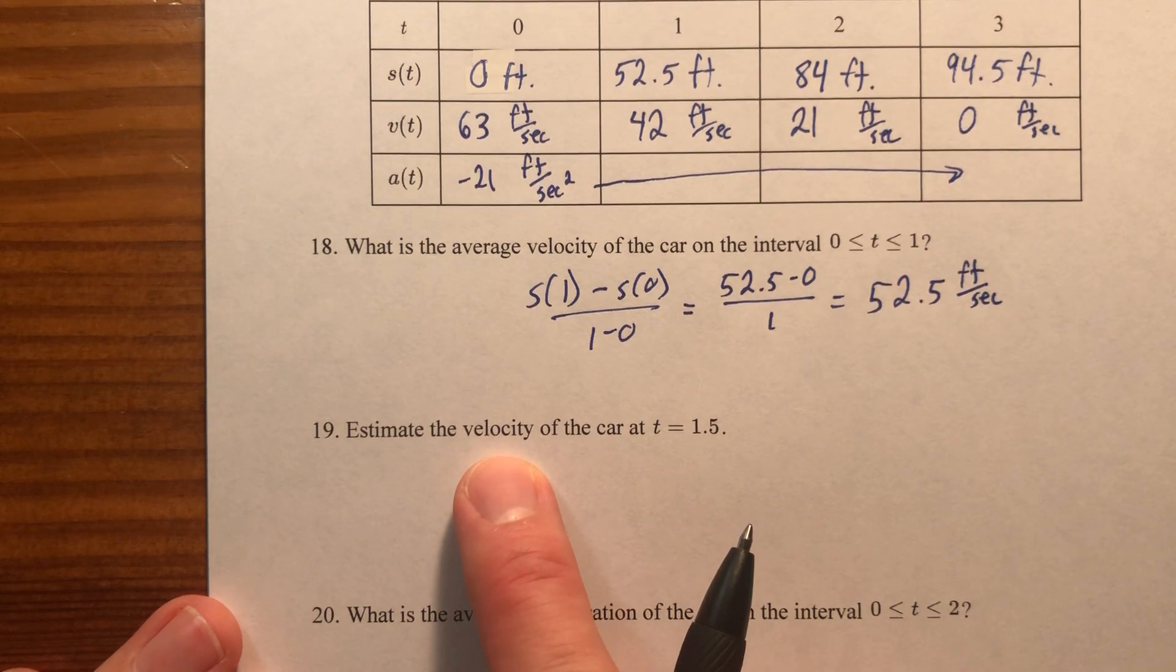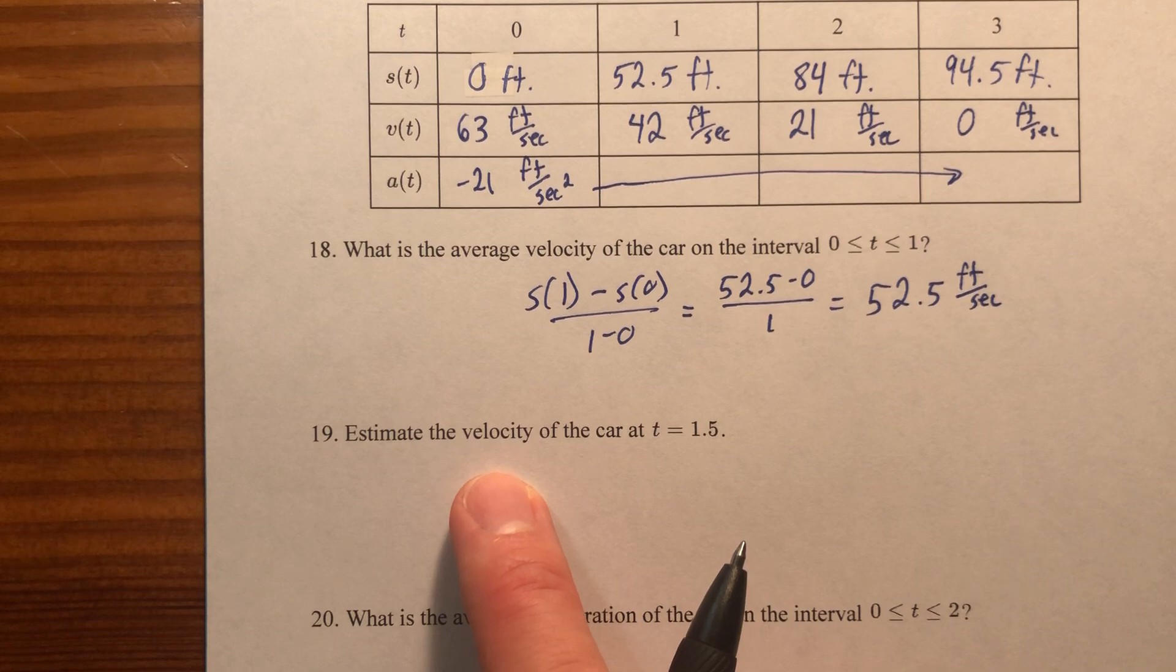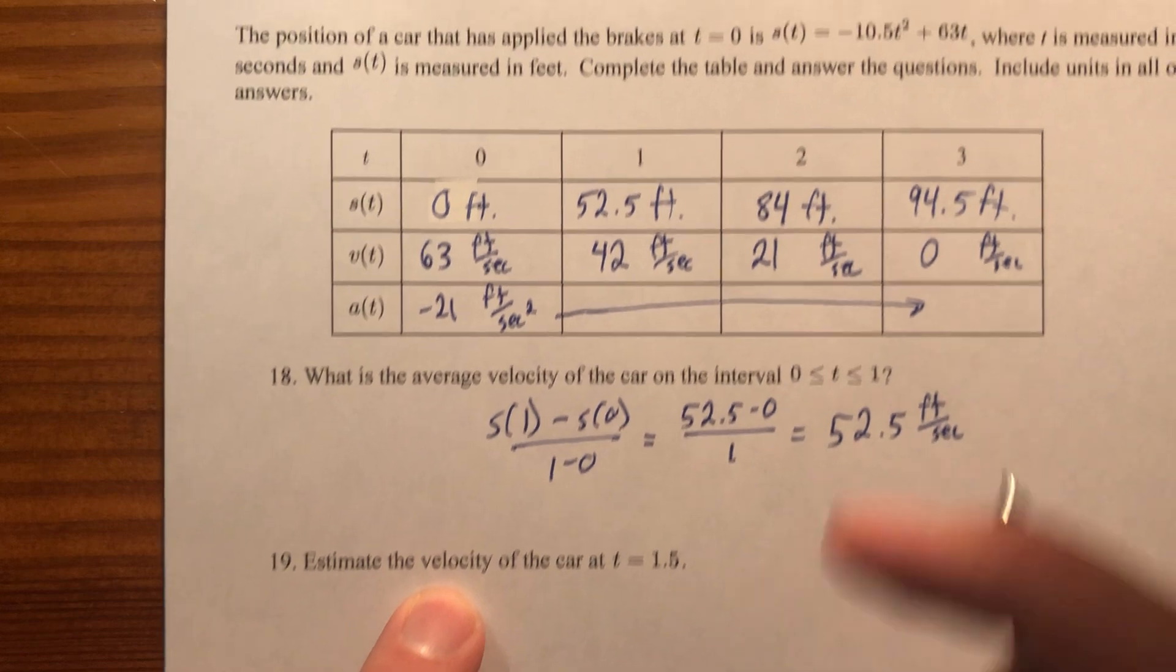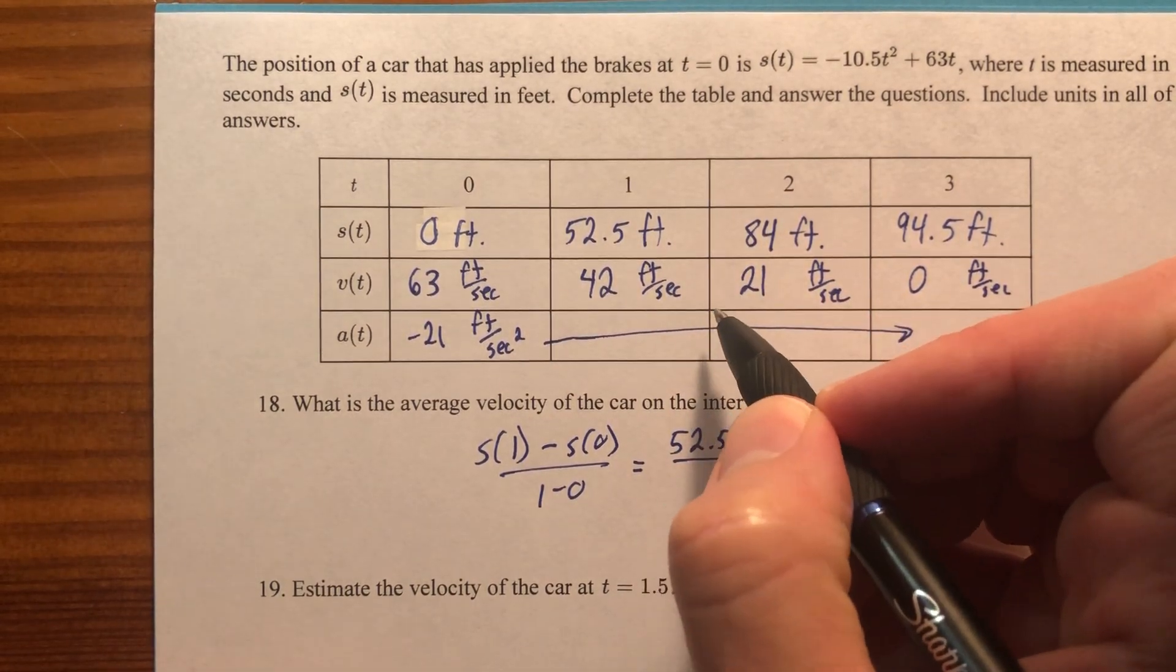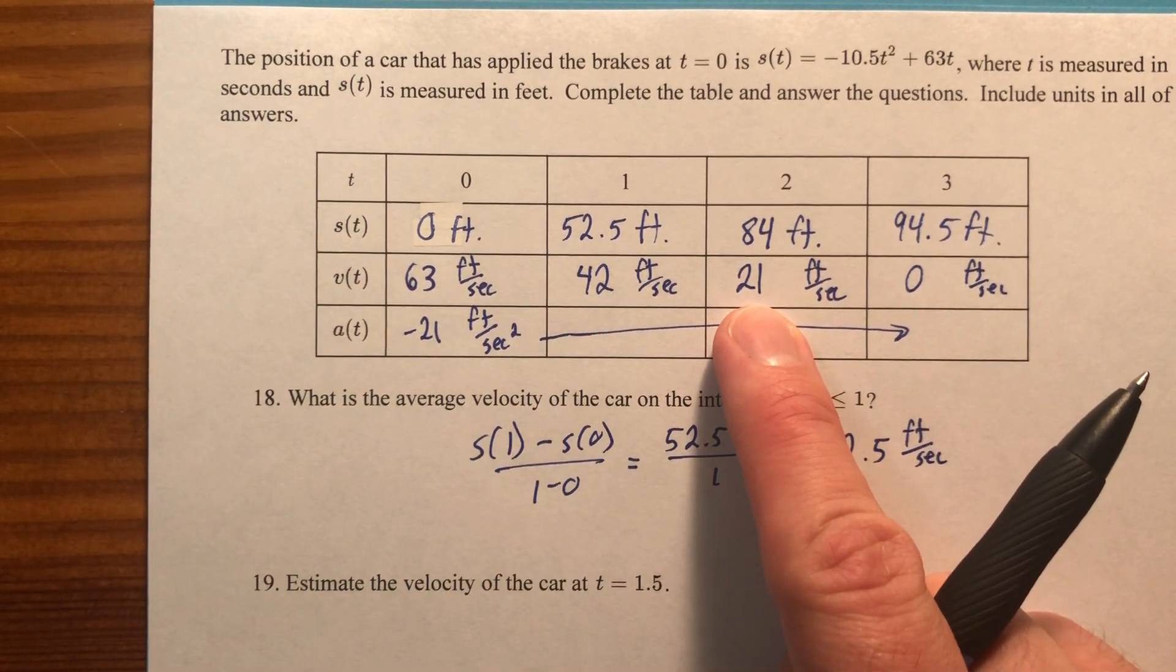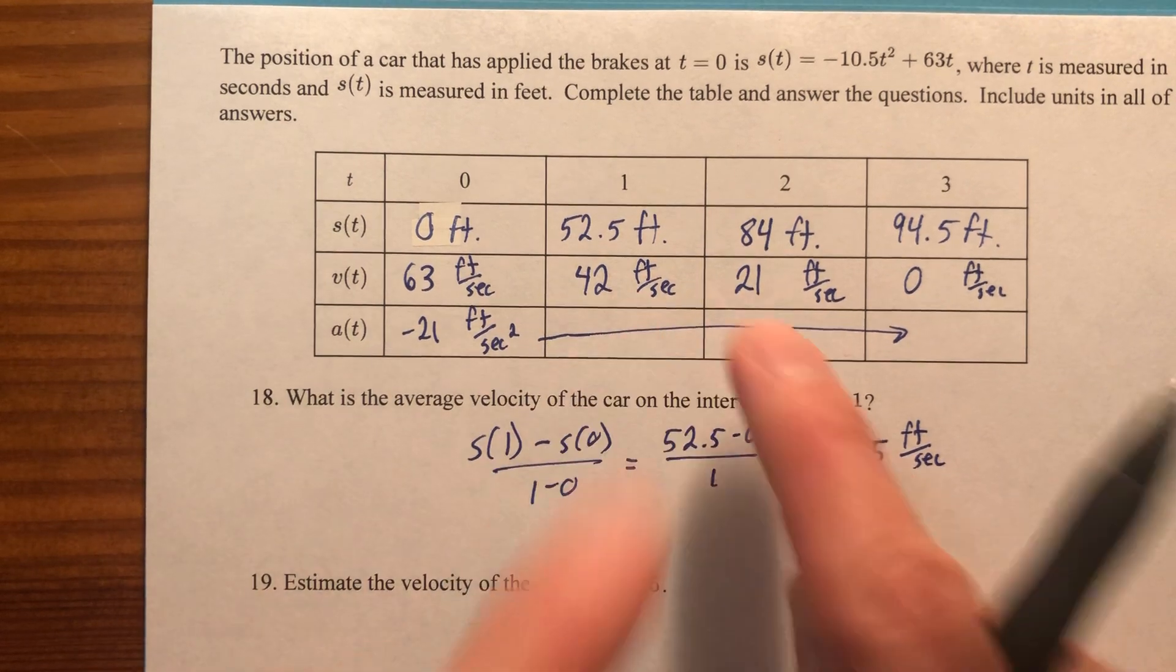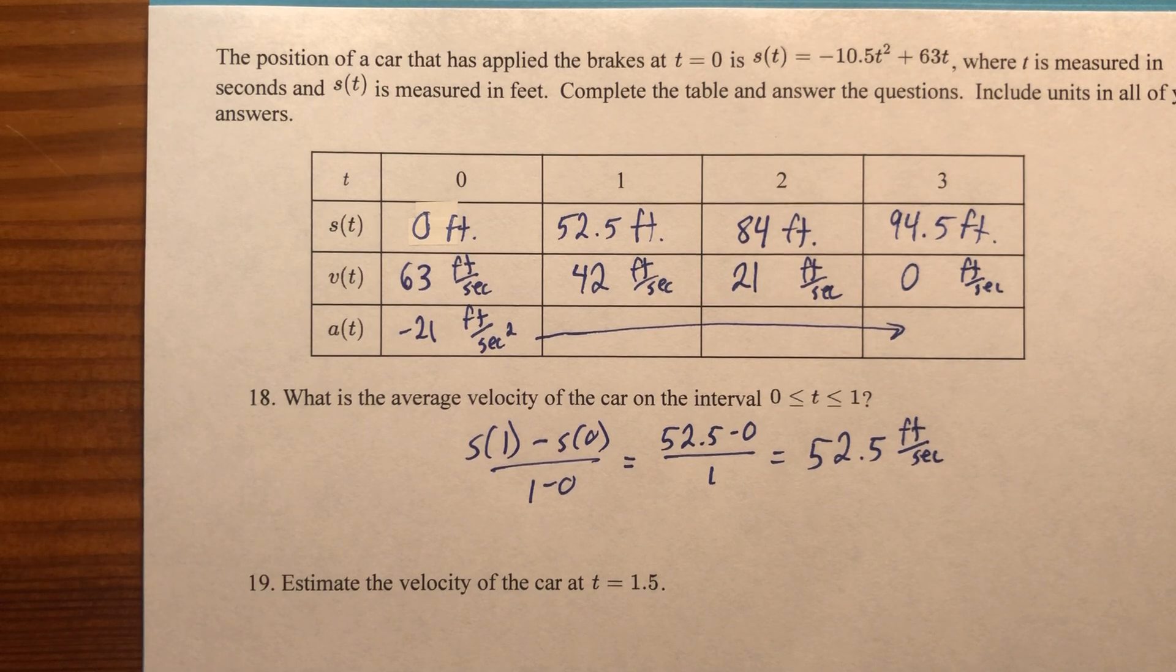We want to estimate the velocity of the car. They're asking us to estimate, not find the exact, but we're going to find the estimate of the velocity of the car at one and a half. And the estimate of the velocity is somewhere in between here, because one and a half is between one and two, obviously. Now, you might be tempted to average these two numbers, and that is not necessarily what we're going to do. Although the answer would be the same if we did, but that's just a coincidence based on the way the equation is set up.